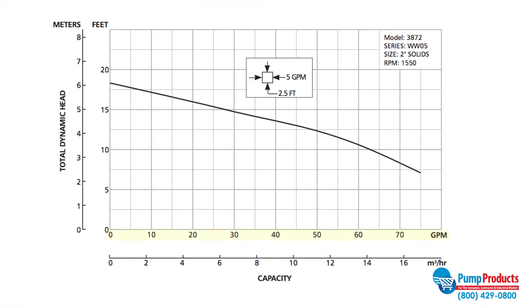The x-axis represents flow rate, usually measured in gallons per minute. The y-axis represents total dynamic head, or the distance to which the pump can raise water, which is usually measured in feet.